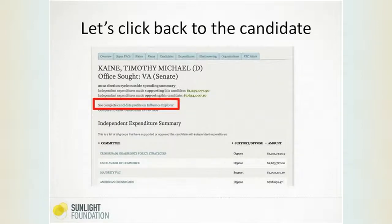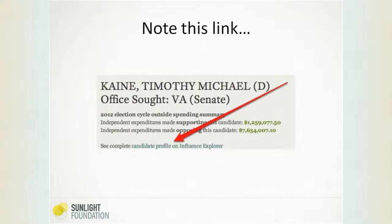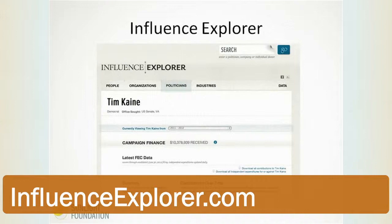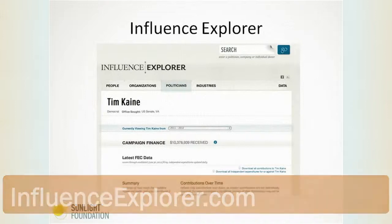Let's go back to the Tim Kaine example. This is his page on Follow the Unlimited Money Tracker. One of the things you can see here is a link to something called a candidate profile on Influence Explorer — another tool the Sunlight Foundation makes. Influence Explorer brings together a whole lot of different kinds of information in one place. You can download data from it — bulk data on lobbying, federal regulations, contracts and grants. For our purposes today, we're going to focus on getting quick information: if you're following something and trying to background somebody or get information about a candidate, Influence Explorer has very quick ways of doing that.